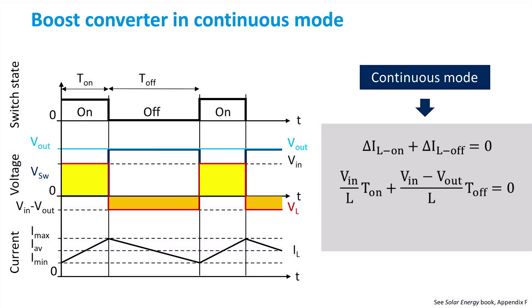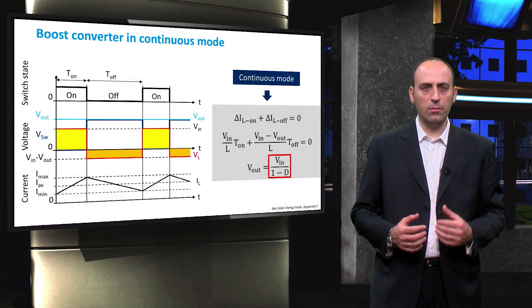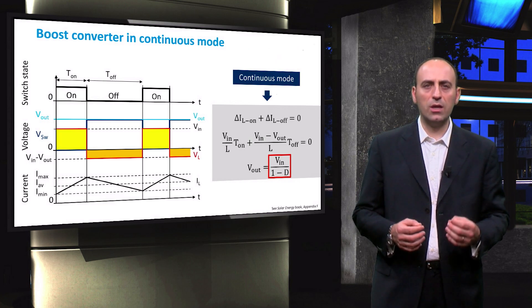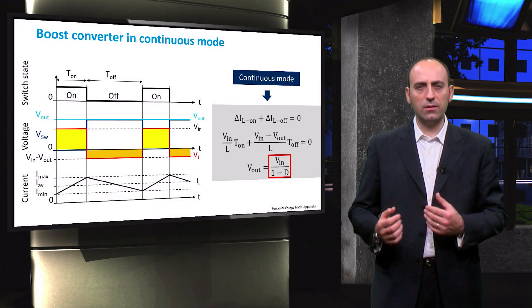Using the results of the two integrals previously obtained, we can derive the equation relating output voltage and input voltage as a function of the duty cycle. Since D can be any number between 0 and 1, the denominator is always lower than 1, thus the DC output voltage is always higher than the input. That's why we call it the boost converter, because we start from a voltage at the PV side and increase it at the load side.